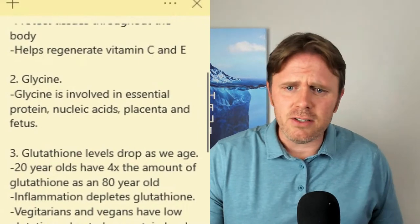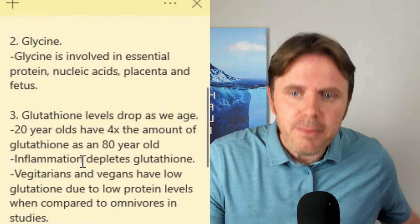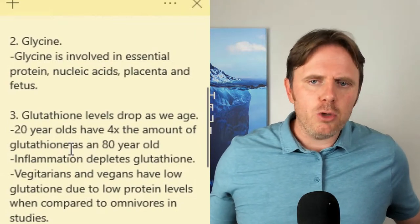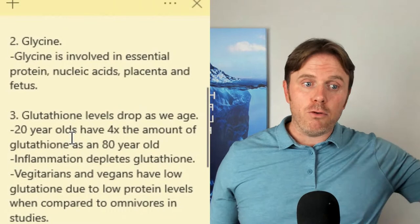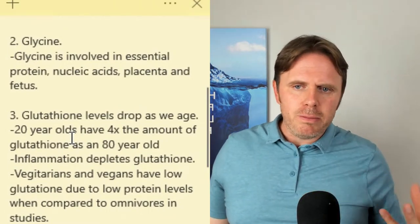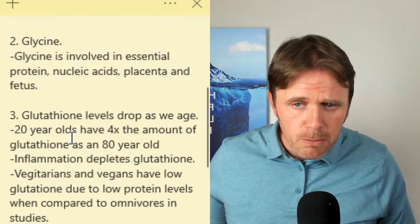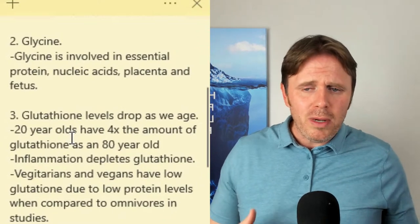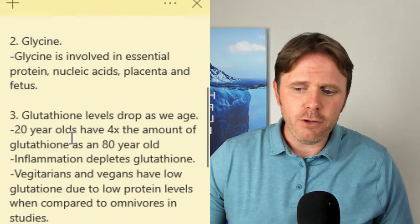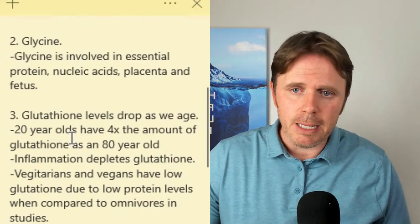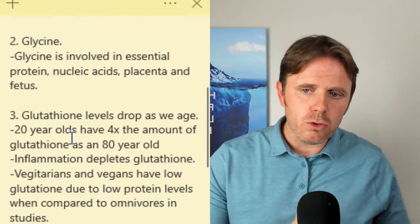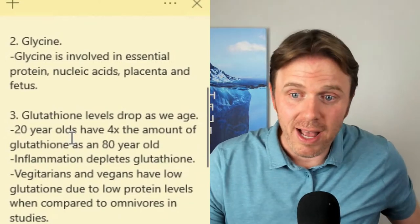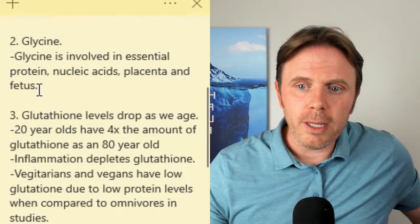Vegetarians and vegans have lower glutathione because glutathione is a tripeptide — glutamine, glycine — and these amino acids aren't found super abundantly in plant-based products. You could take a plant-based protein powder with some benefit, but animal products are the ultimate source. Plus, animal products have really good fat-soluble vitamins A, D, E, and K, B12, iron — important nutrients you just don't get in plant-based products.